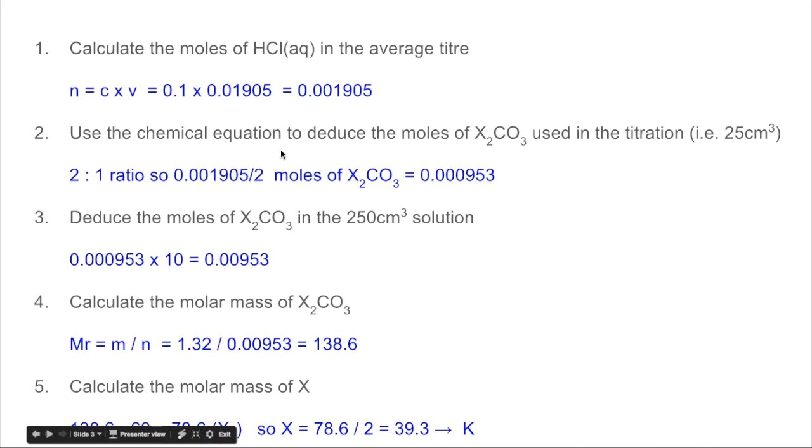The chemical equation helps us deduce the moles of X₂CO₃ used in the titration. There's a two to one ratio and so there would have been half as many moles of X₂CO₃ present. So that's that number there.